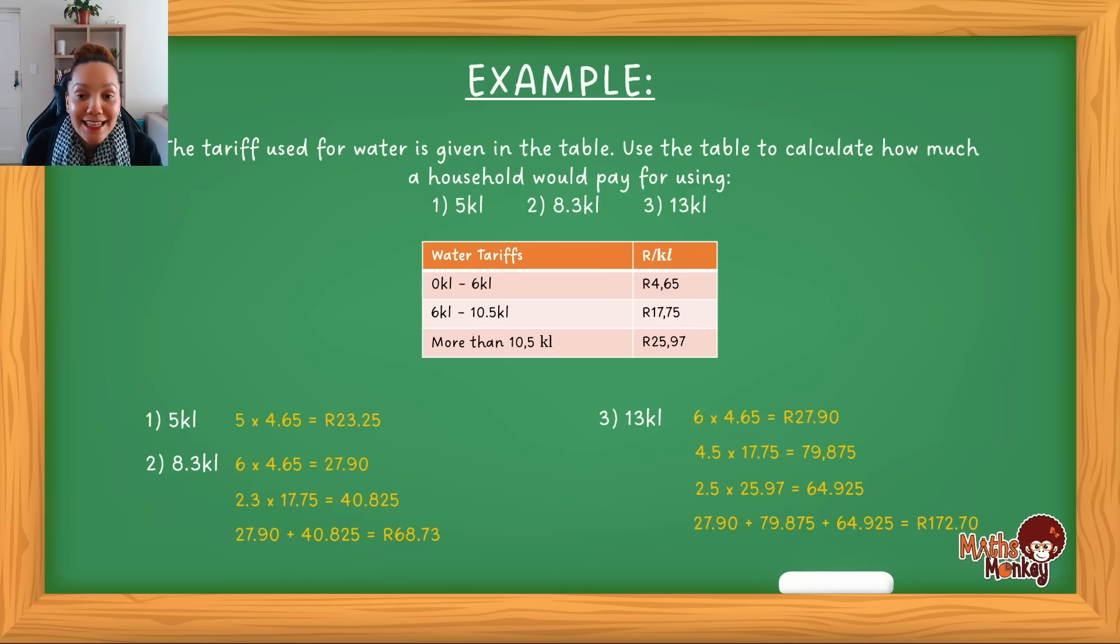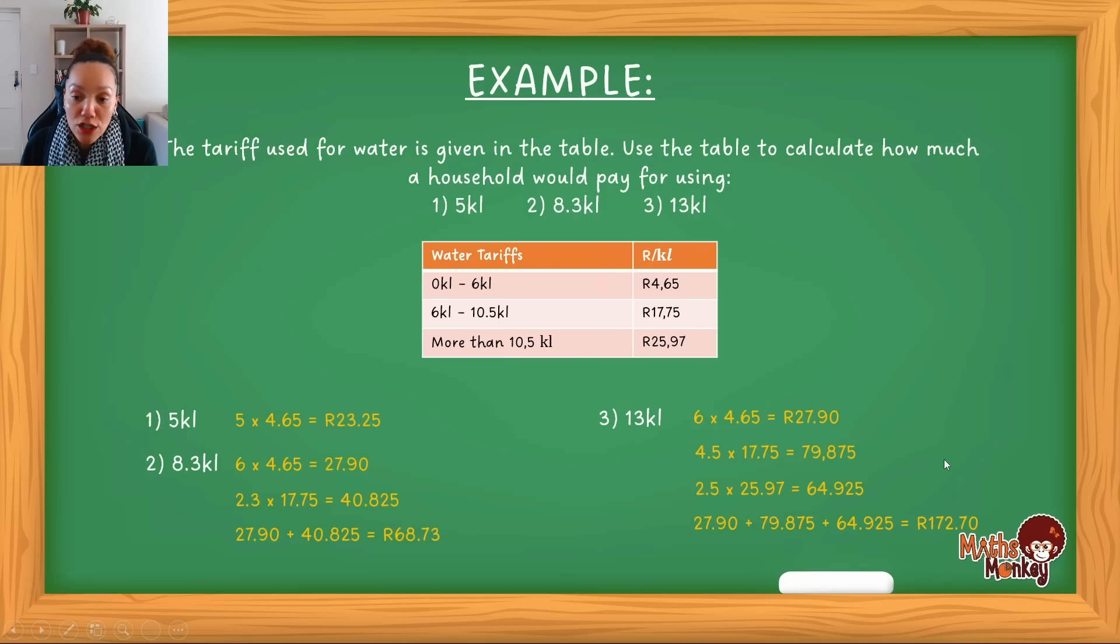So the secret here is understanding that the earlier water, the smaller amount that is used, obviously the less you pay, but the smaller range will always be how much you are going to be charged regardless of what the big total is. So the first 6 will always be 27.90, whether this family used 100 kiloliters or whether this family used only 6. That first 6 will always be the same price. So I hope this sort of clarifies that a little bit for you. Now let's look at how can they ask this in an exam type situation.